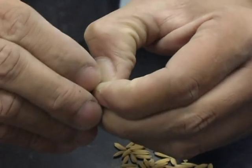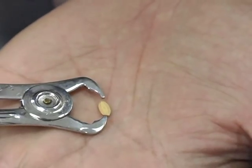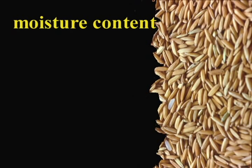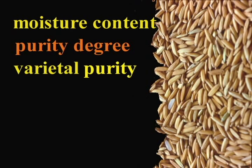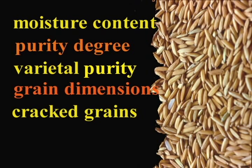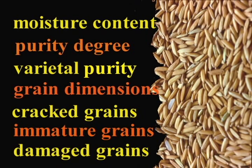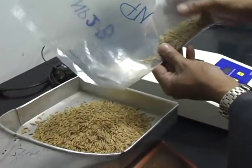Seven interrelated features determine the quality of paddy. These are moisture content of paddy, purity degree, varietal purity, grain dimensions, cracked grains, immature grains, and damaged grains. Now let's look closely at each characteristic.